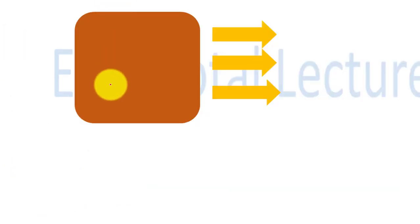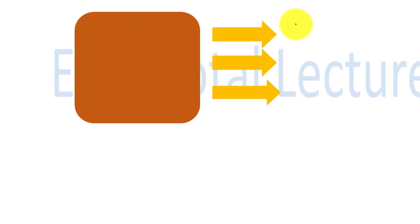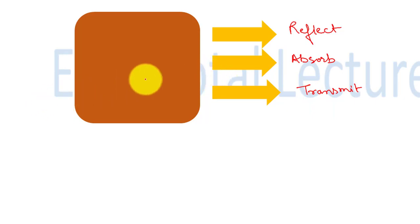When we take a body and irradiate it with electromagnetic radiation, three things can happen: some light will reflect, some will absorb, and some will transmit. Not all the light is absorbed. This is because the bodies we see in nature are not perfect absorbers of radiation — some reflects back. An ideal body would absorb all radiation, but in practice incomplete absorption happens.